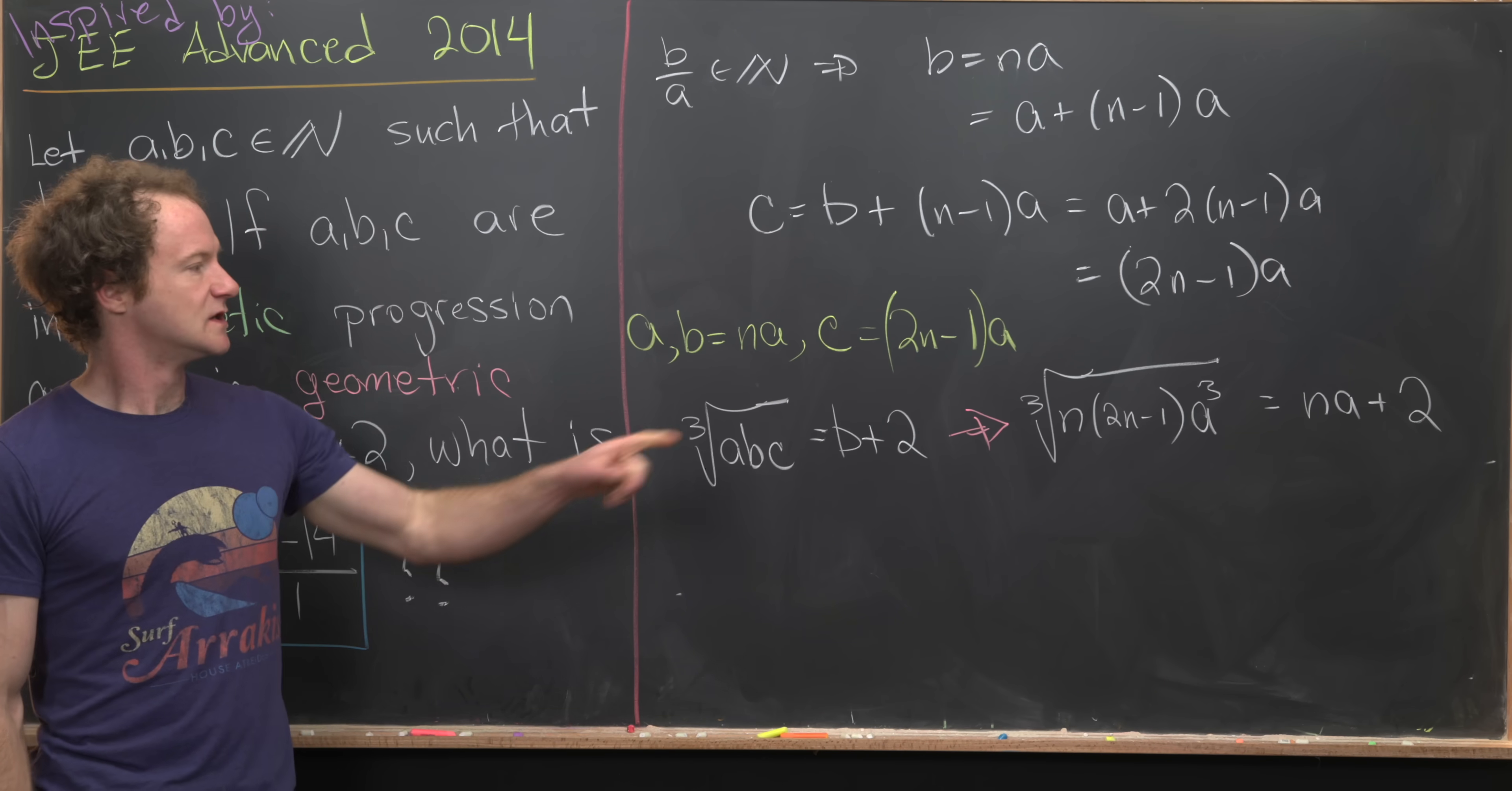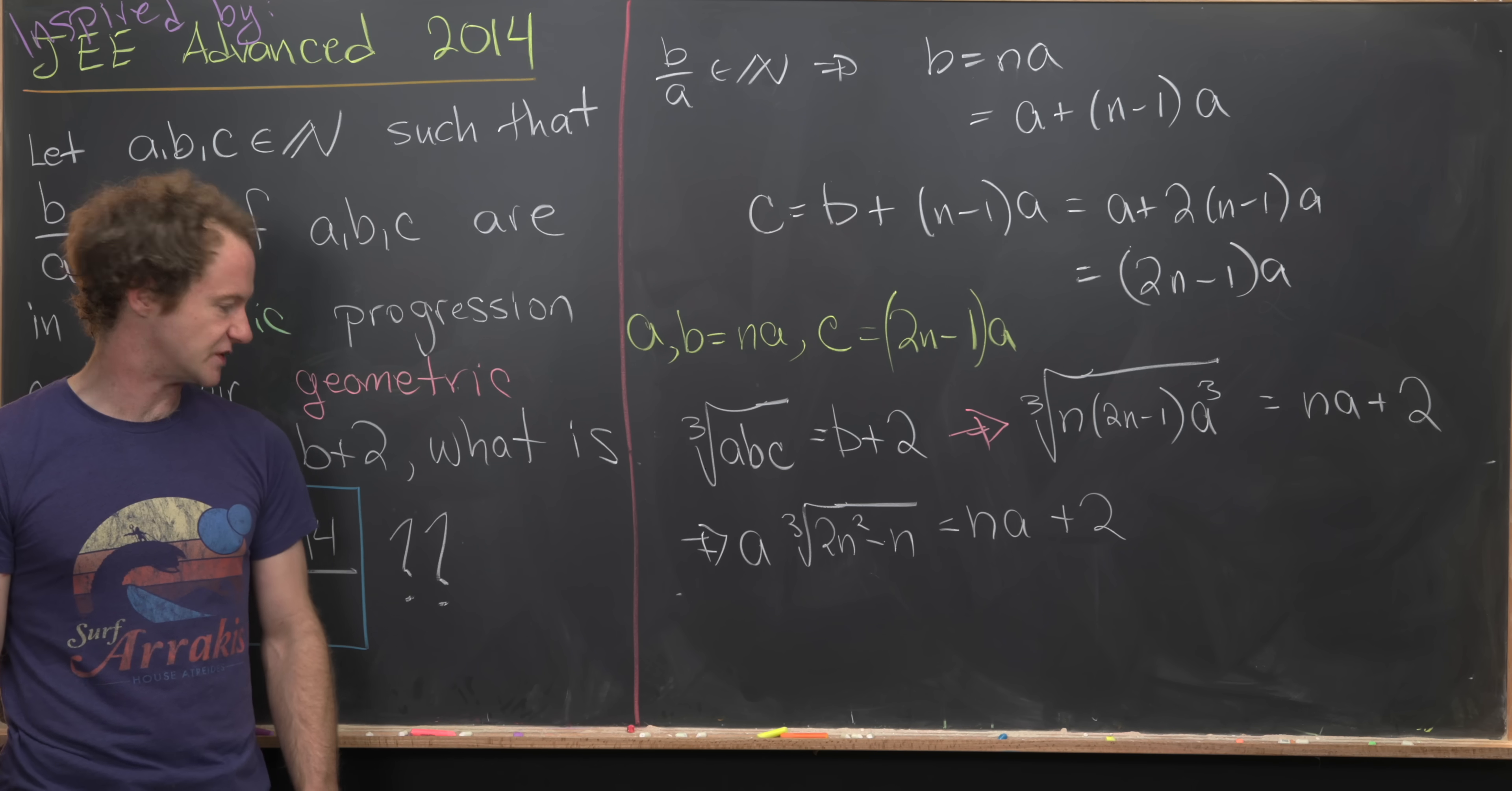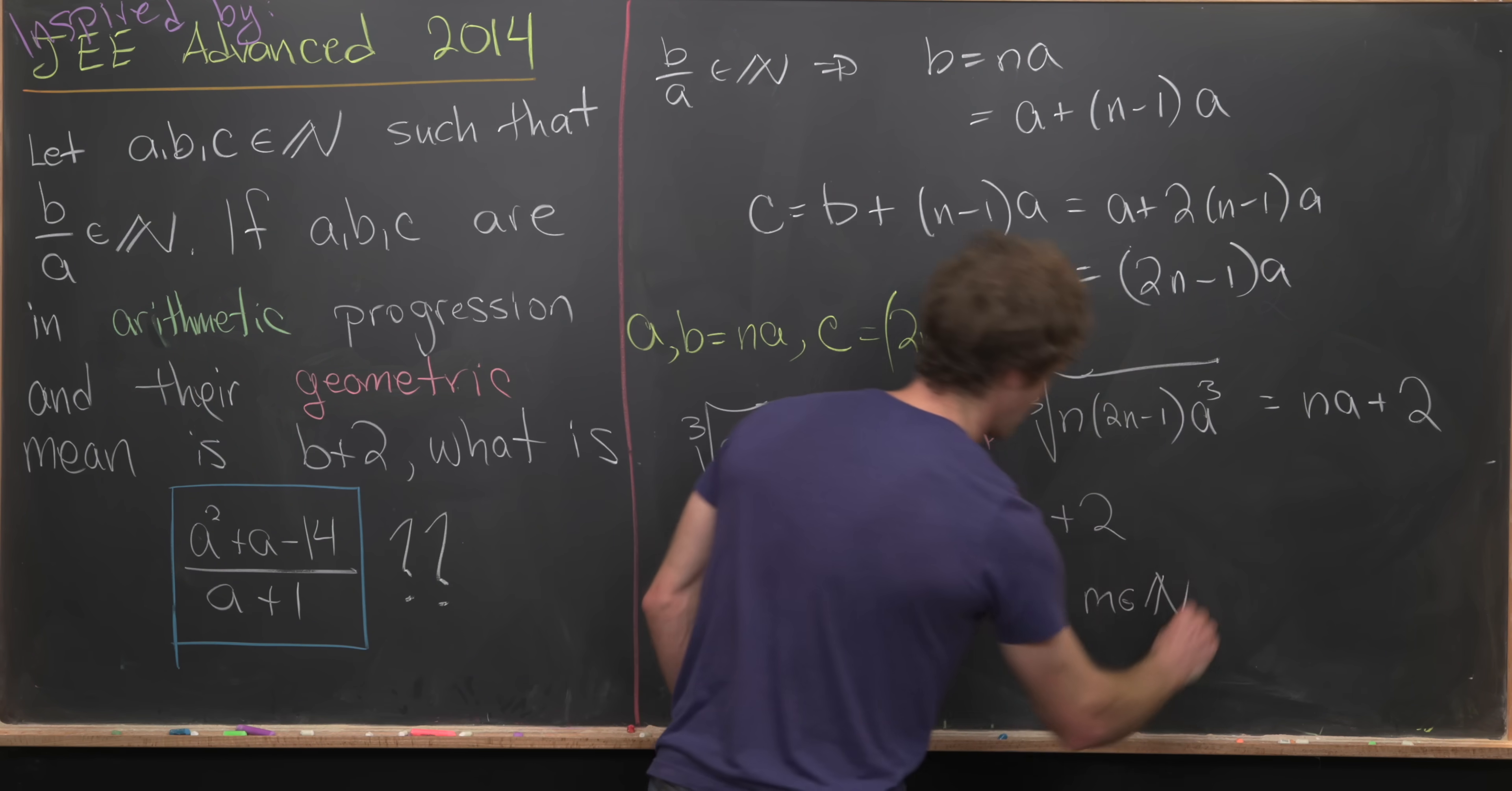So let's see where we can go from here. So we can maybe factor this A cubed out of the cube root, and that's going to leave us with A times the cube root of, maybe multiply this through, 2N squared minus N equals N times A plus 2. And now we've entered into a really interesting position. Notice that something like this only makes sense if 2N squared minus N is a perfect cube. So notice what we need here is 2N squared minus N to be a perfect cube. So that's got to be equal to M cubed for some natural number M like that.